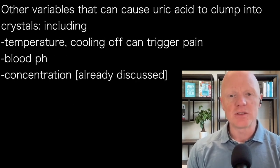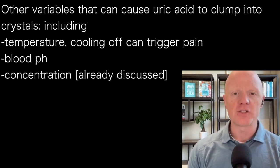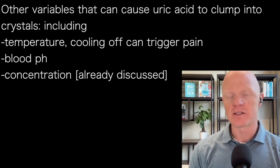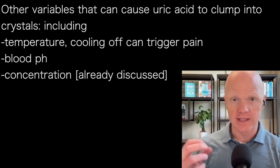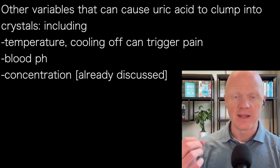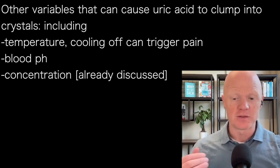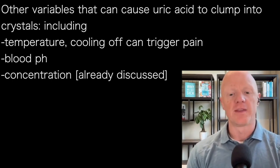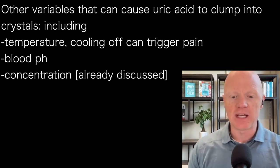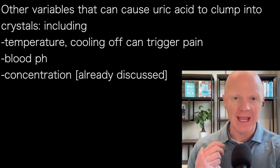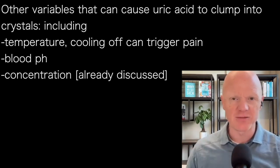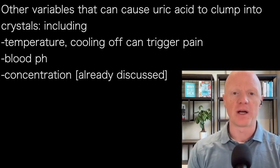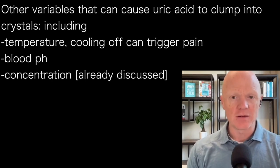In addition to simply high levels of uric acid, there are additional variables that can cause uric acid to start to crystallize and clump together. That can include temperature — as temperature changes and starts to cool off, it can increase crystallization, which may be one reason our hands can get this, since hands are often colder than the core of the body. Blood pH can also affect it, and of course, as mentioned, the concentration.